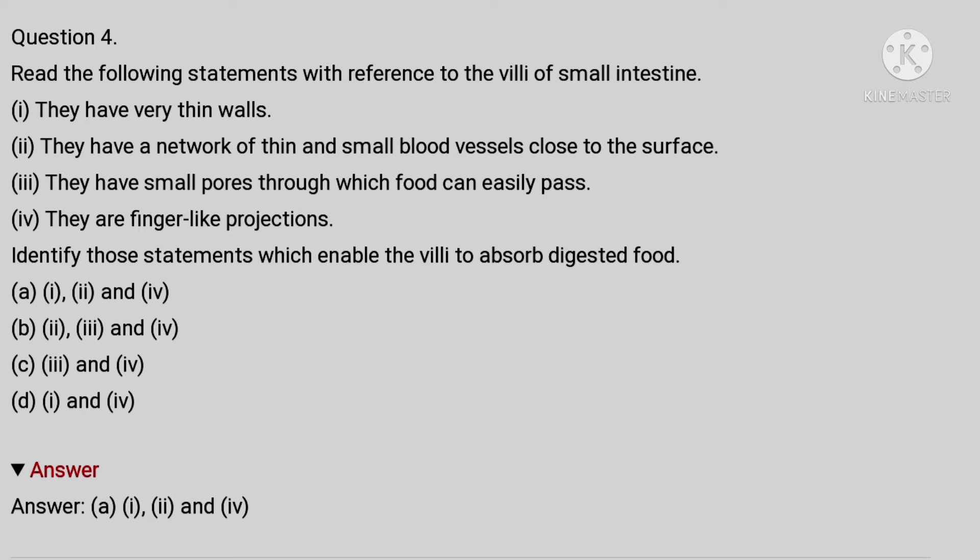Option A: first, second, and fourth. B: second, third, and fourth. C: third and fourth. D: first and fourth. And the answer is first, second and fourth, which is they have very thin walls, they have a network of thin and small blood vessels close to the surface, and they are finger-like projections.